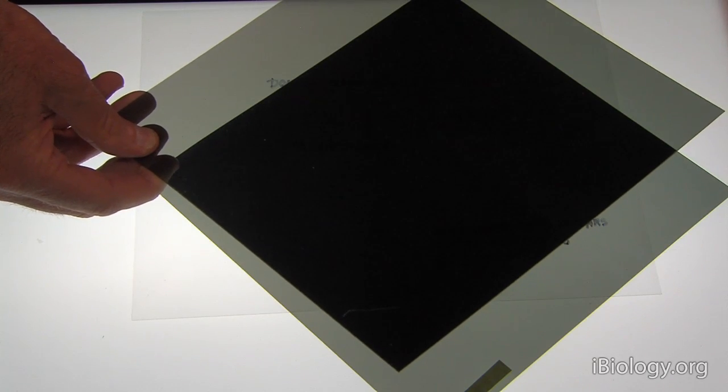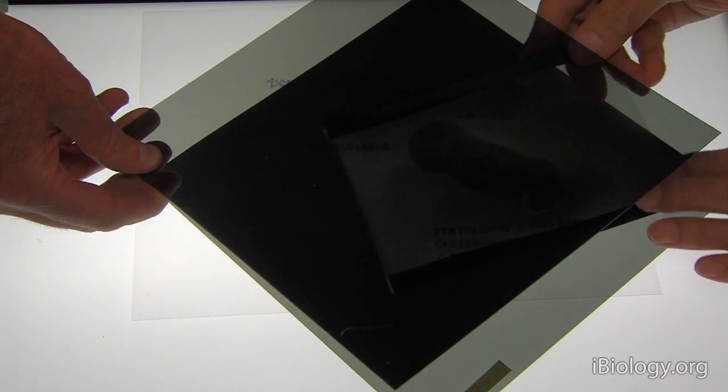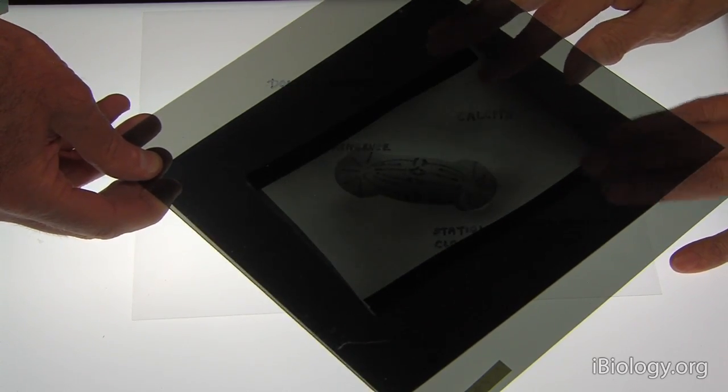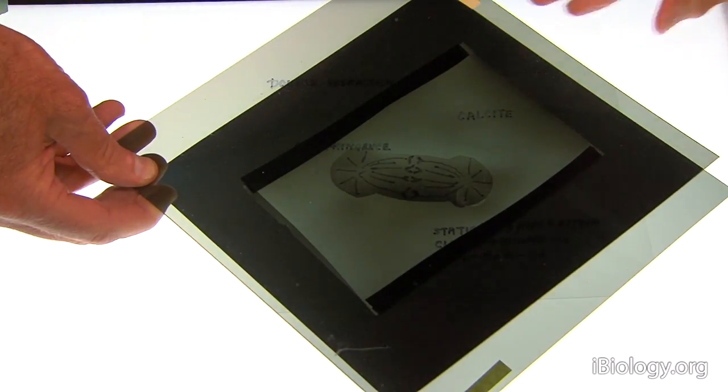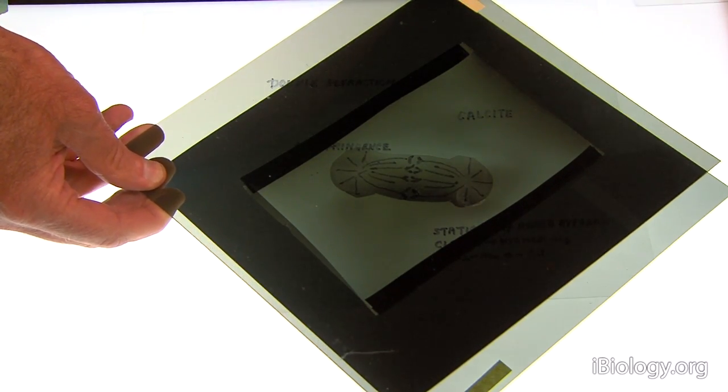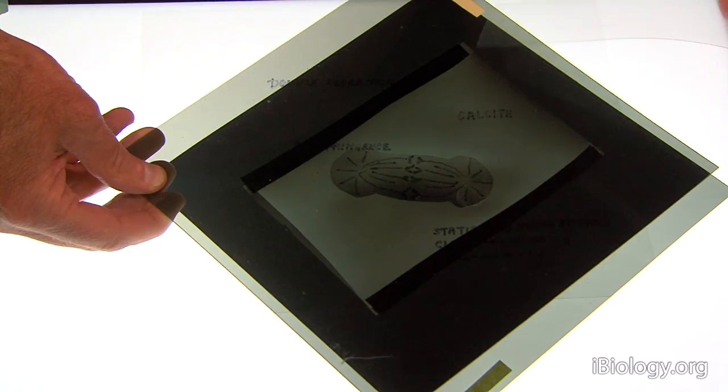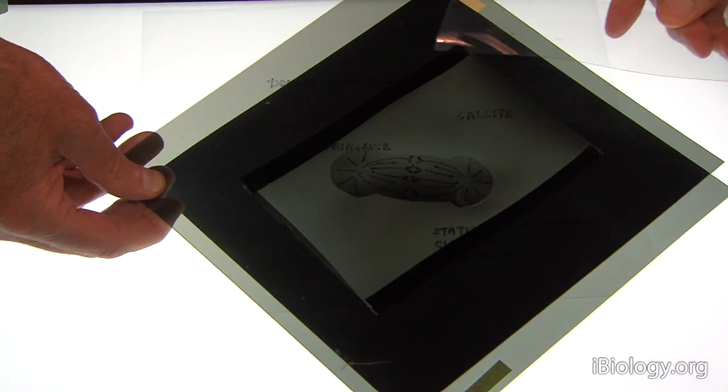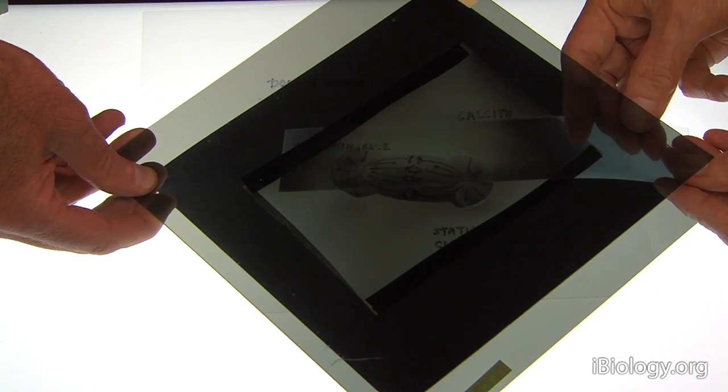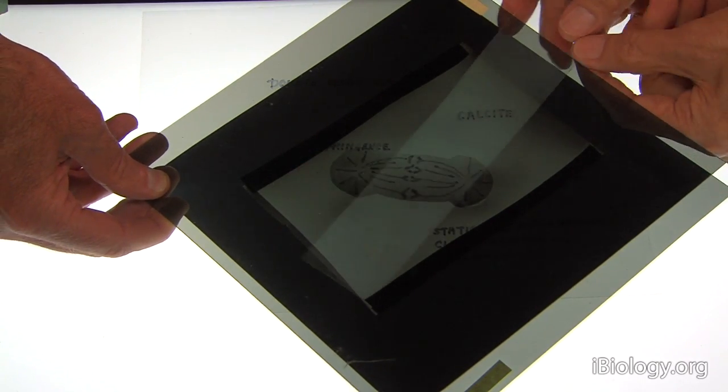Instead of the calcite crystal, I'm going to put a birefringent biological sample here, which you may just be able to see or not because the contrast is terribly weak between cross polarizers. But now I'm going to put another birefringent material, and it should become brighter or darker.